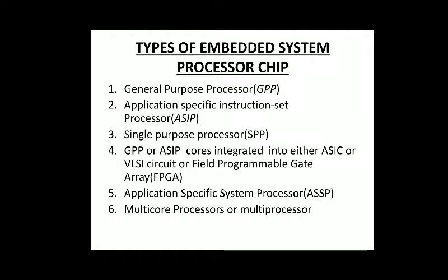Types of embedded system processor chips include: General Purpose Processor (GPP), Application Specific Instruction Set Processor (ASIP), and Single Purpose Processor (SPP). GPP or ASIP cores can be integrated into either an ASIC, VLSI circuit, or Field Programmable Gate Array (FPGA). There is also the Application Specific System Processor (ASSP) and multicore processors or multiprocessors.